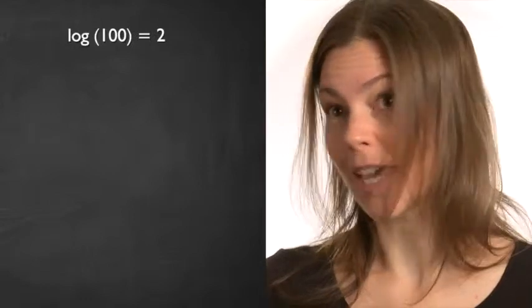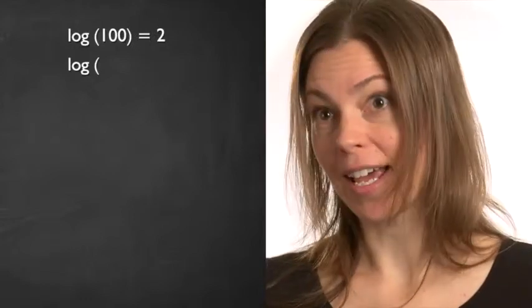Next we're going to remind ourselves of logarithms and exponentials. Both are basically the scientists' way of dealing with a lot of big numbers or small numbers or a lot of zeros. Logarithms is another way to say the order of magnitude of something. The logarithm of 100 is 2, we just count the zeros. The logarithm of 10 is 1.